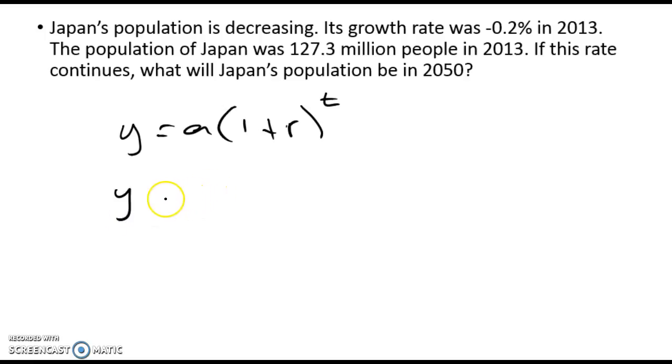That's our output. That's what we're looking for. That's what the population is going to be in 2050. And we've got 127.3, which we're going to add the zeros later because it's 127.3 million. 1 minus 0.002 because we're changing it to a decimal.